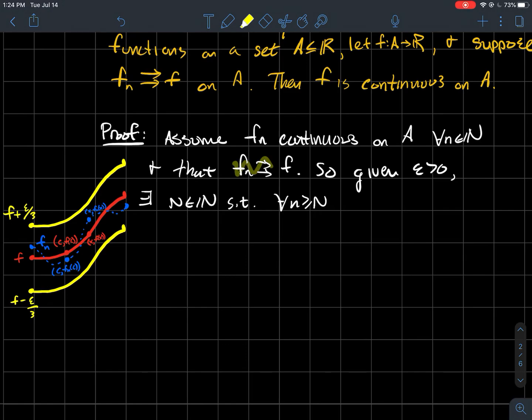So what we can say given this, that for any epsilon, so pick one, well I guess for any epsilon someone gives you is what I mean, you should be able to find a natural number capital N so that as soon as you get past that you can guarantee that all the functions in the sequence are within epsilon over three of the limit function f.